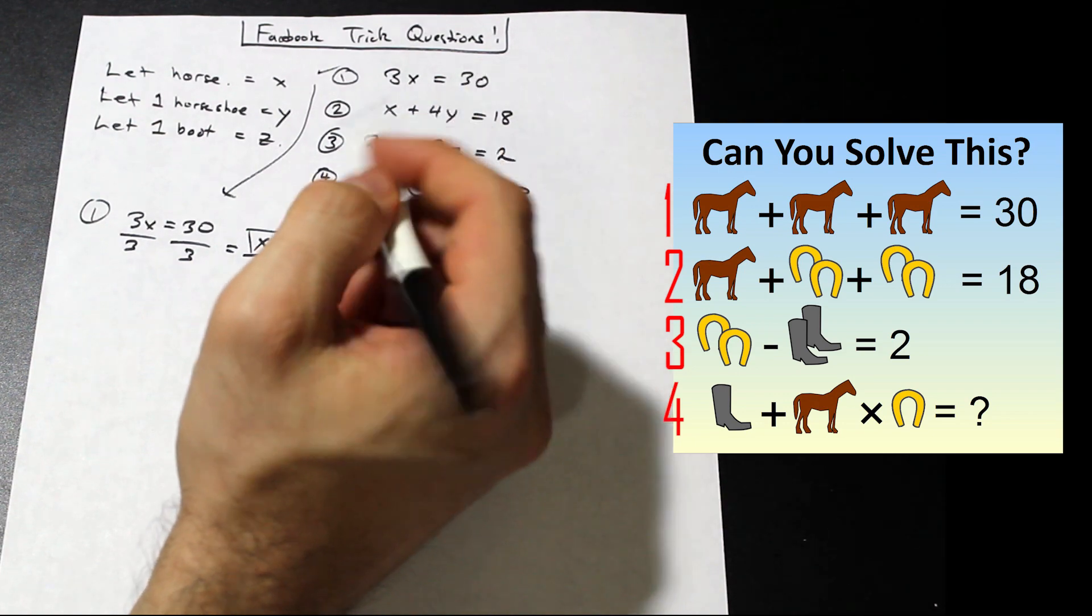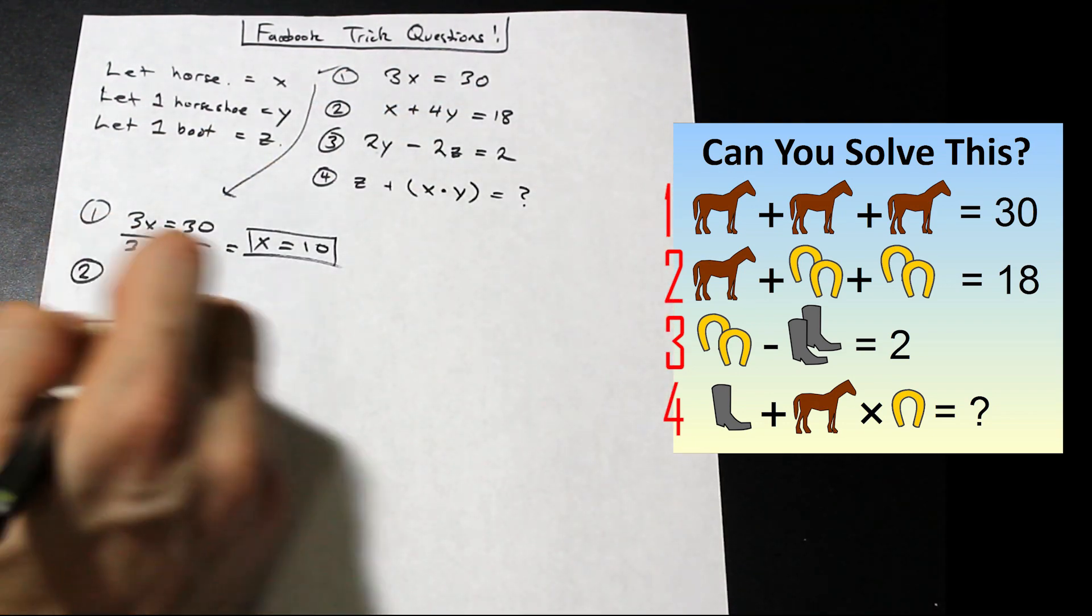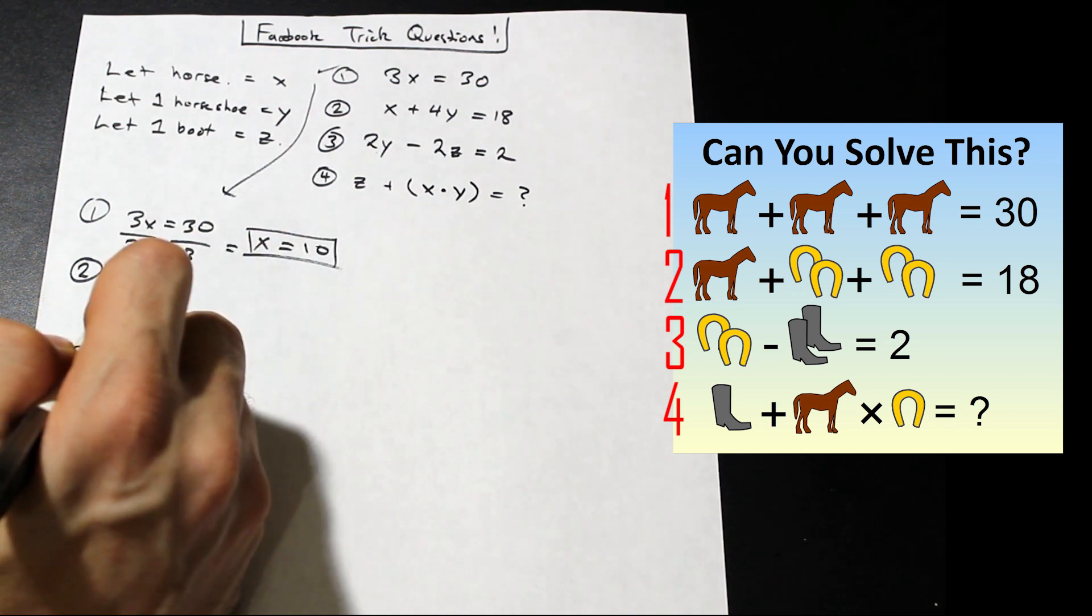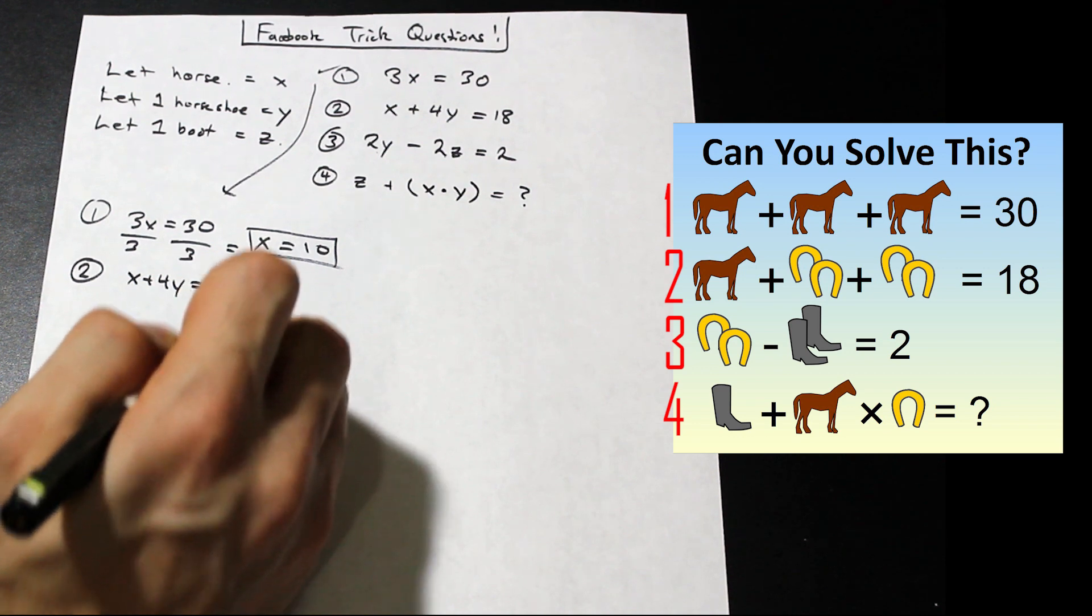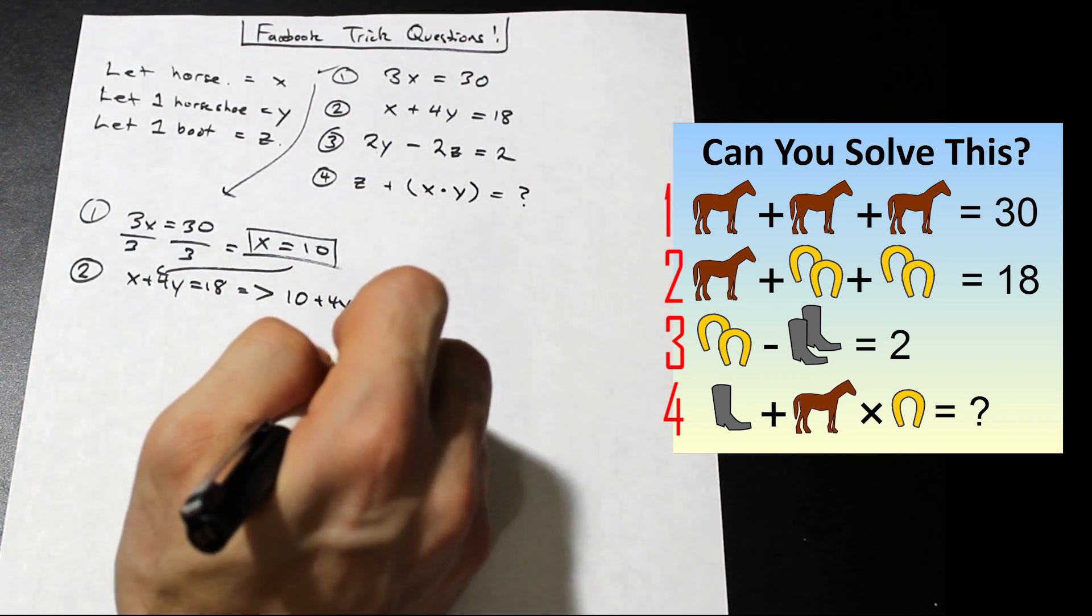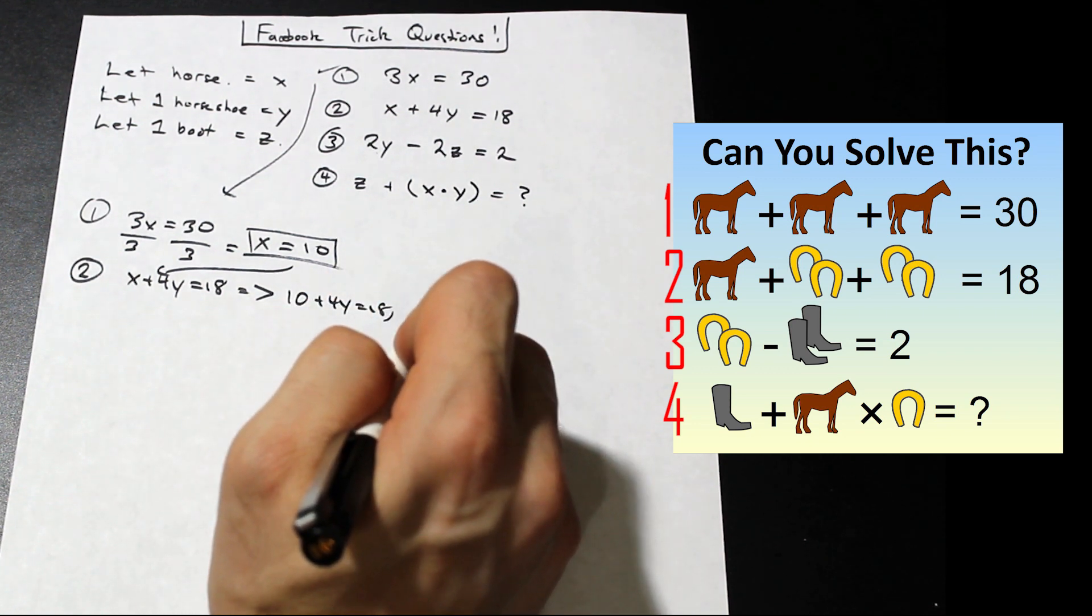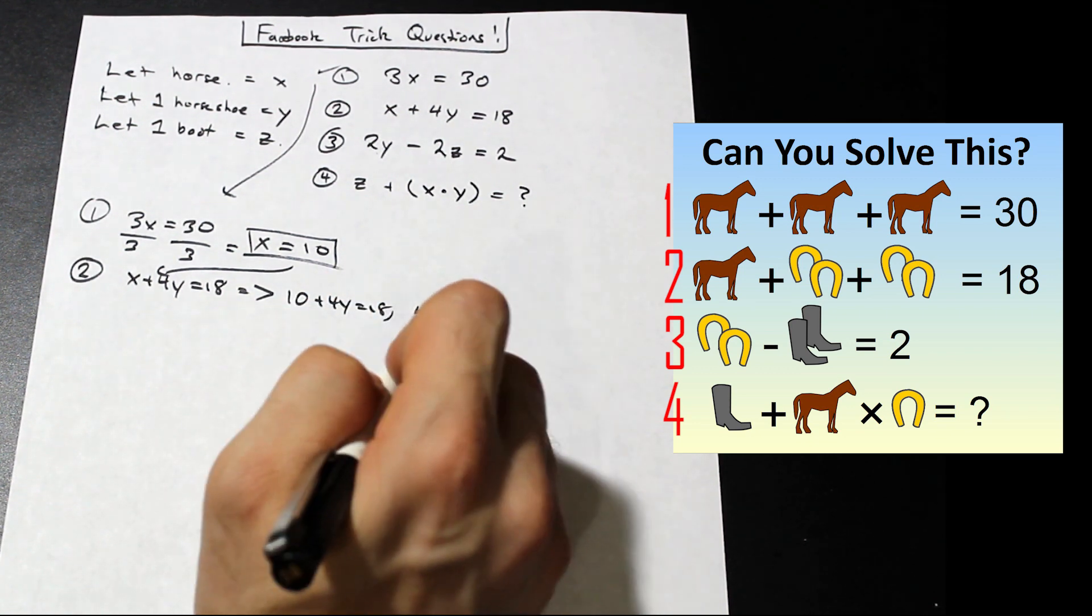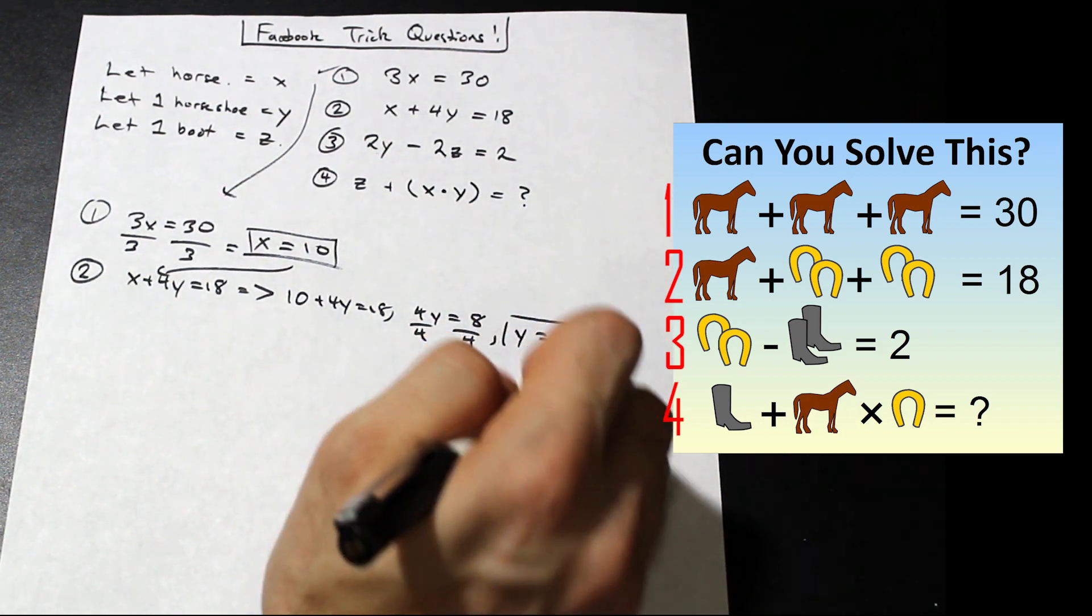Perfect. Now, what we can do is we can put X into equation two and solve for Y. So let's go ahead and do that. So we have X plus 4Y equals 18. So 10 is going to come down into this equation. So we have 10 plus 4Y equals 18. Subtracting both sides by 10, we're going to have 4Y equals eight. Dividing both sides by four, we have Y is equal to two.